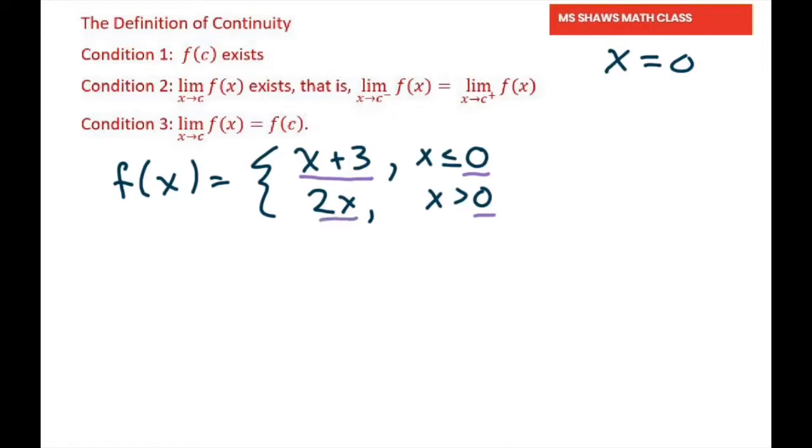So our definition of continuity is here and it must meet all three conditions. So it has to be continuous at zero first. So we're going to evaluate f of zero. Now f of zero, you plug into this first equation. So that's going to be zero plus three equals three. We do have a value here. So that means condition one passes.